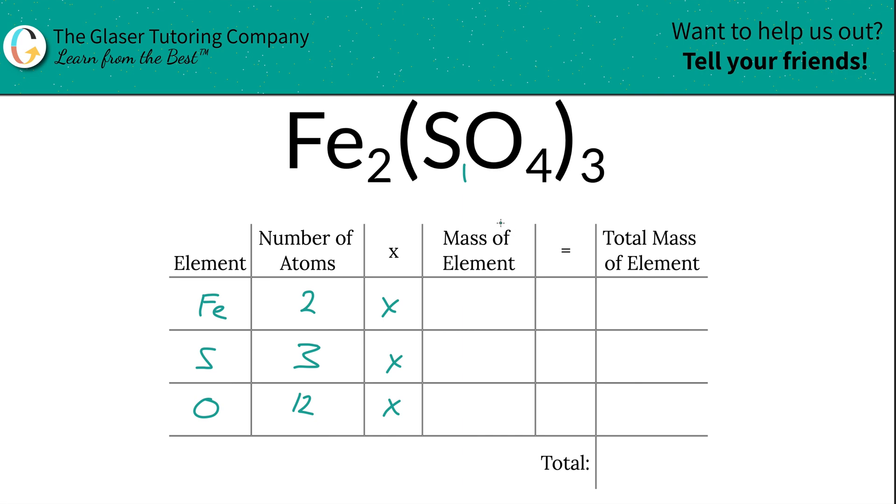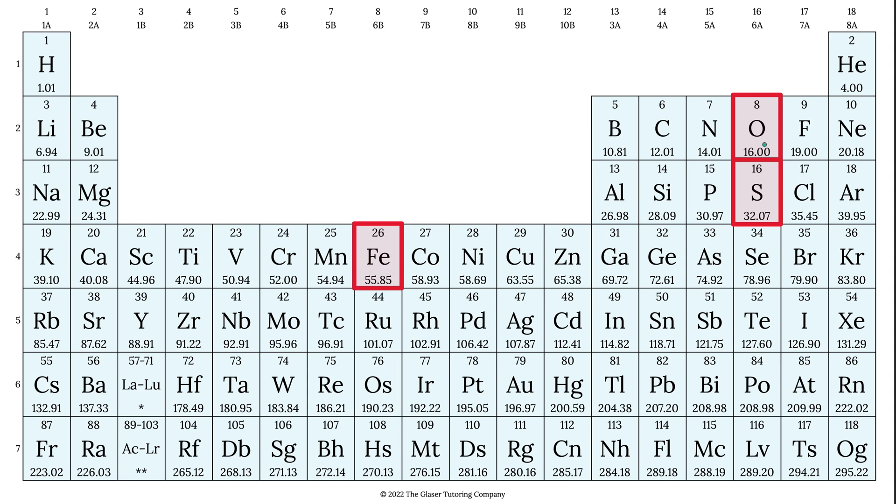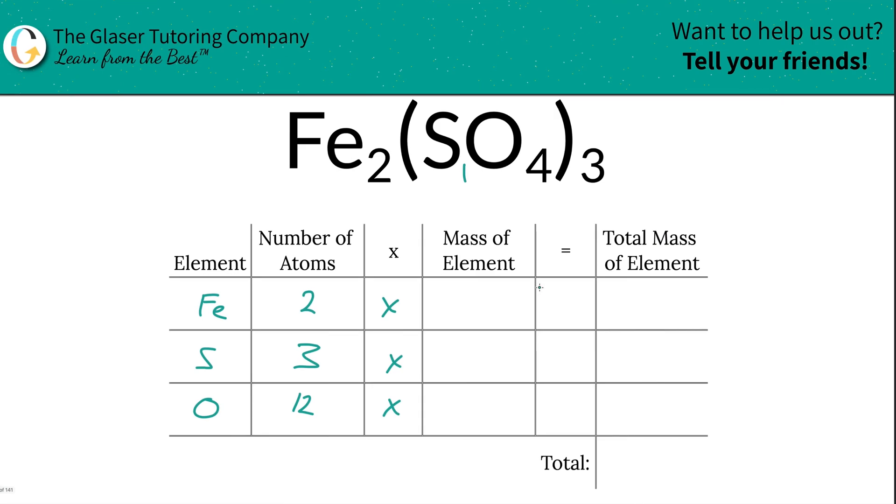Then we're going to take those number of atoms and multiply it by the mass of each element, and those masses are found on the periodic table, so let's take a look. So iron here is going to be 55.85, oxygen is 16, and sulfur is about 32.07. So those are the values we're going to write down.